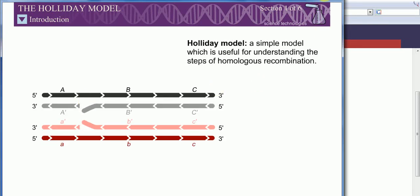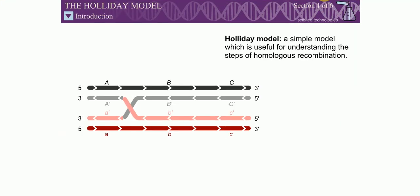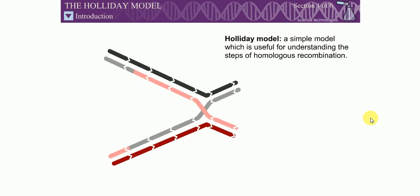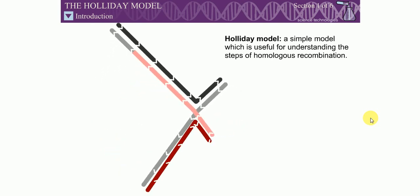The Holliday model is a simple model for homologous recombination. While it is now clear that most recombination events involve synthesis of new DNA, a feature absent from this model, the Holliday model is still useful for understanding recombination.